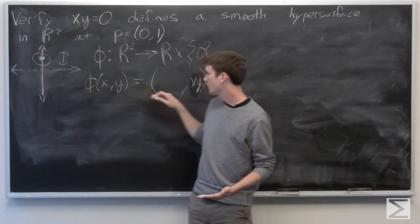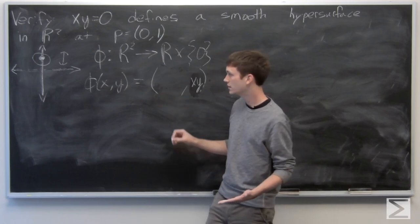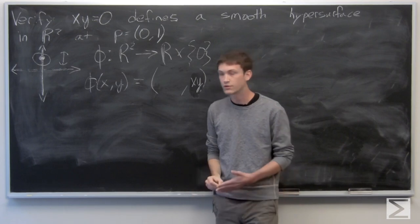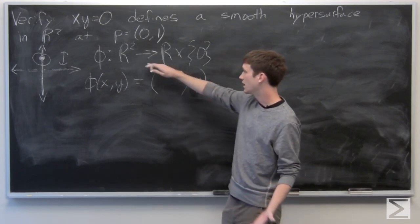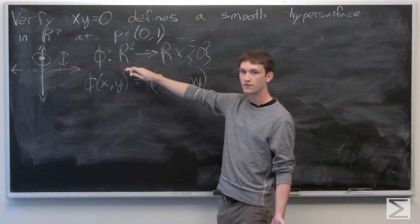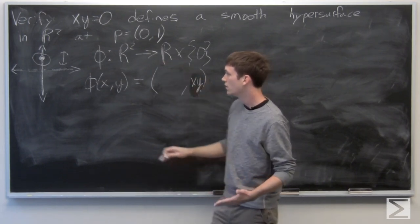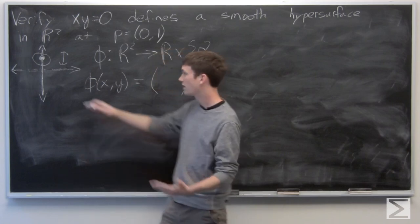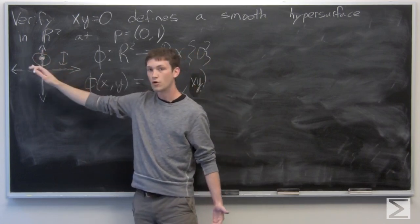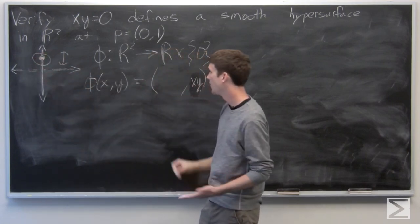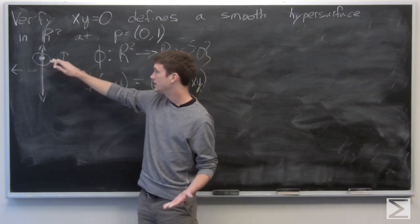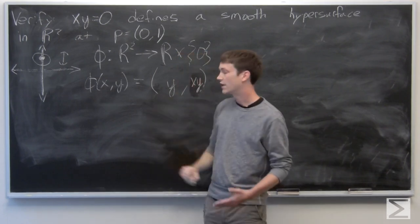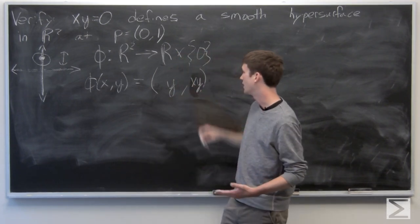So if we chose our first component to be x, this would just take all of these points to 0, which would just be a function from phi from R2 to 0 cross 0, unless it contained points on the x-axis. But we want it for every open interval at that point. But we see that y is changing there, so let's try defining our function as y comma xy.